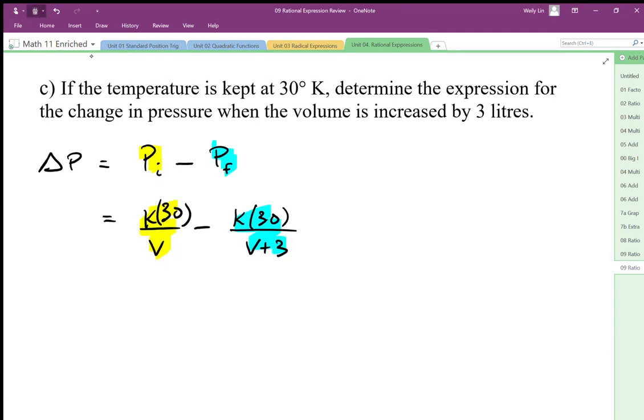Since I know how to add and subtract rational expressions, I'm going to go ahead and do that. The change in pressure is 30k over V minus 30k over V plus 3. We're going to add those together by using a common denominator. I'm going to multiply by V plus 3 and V.